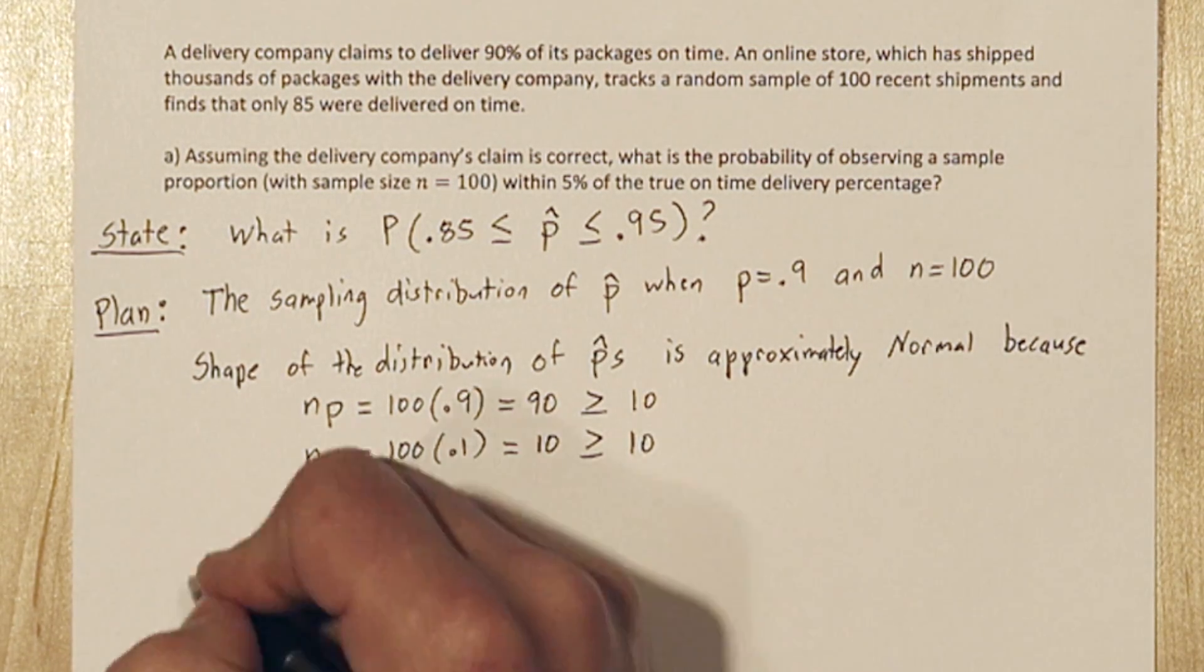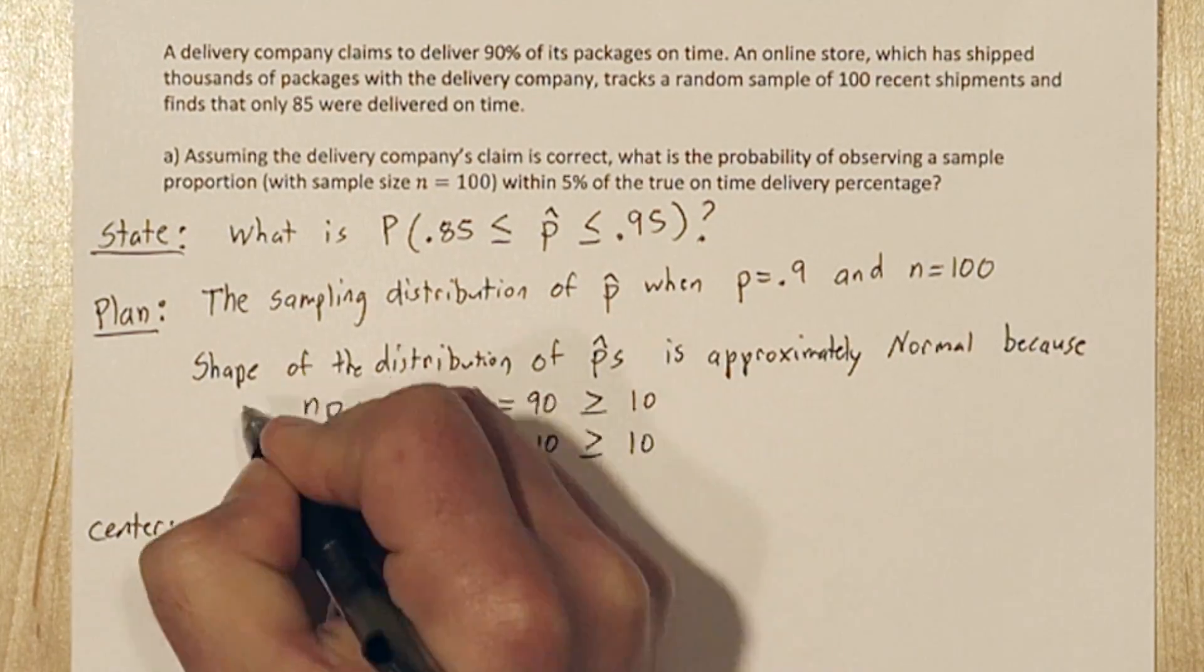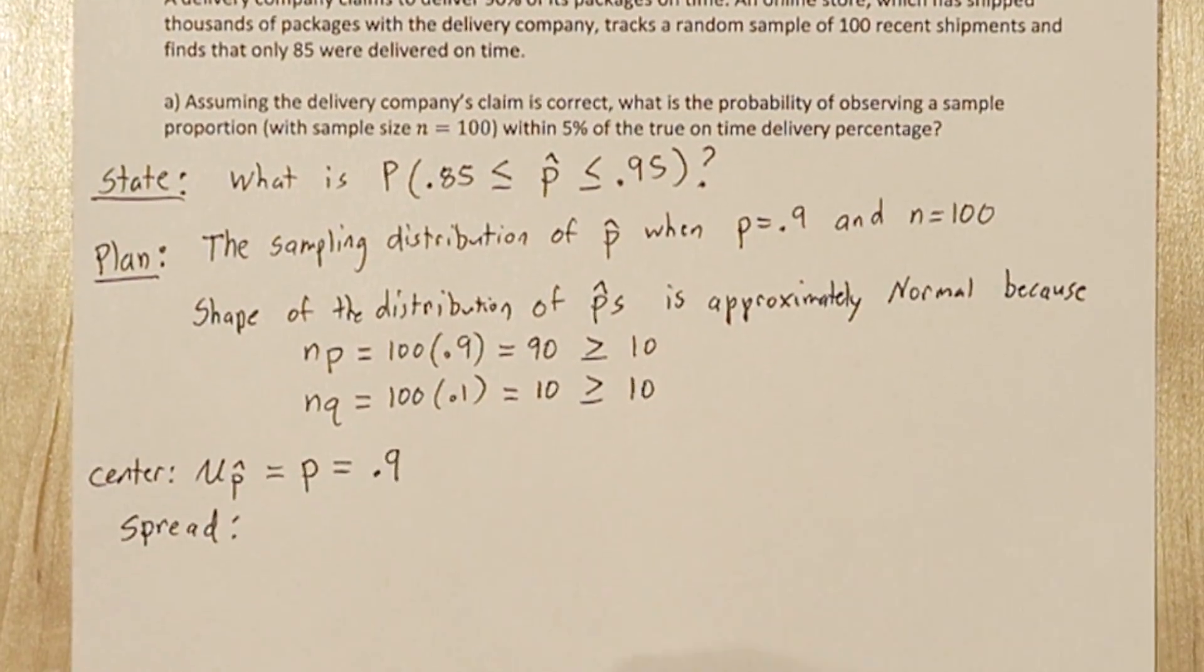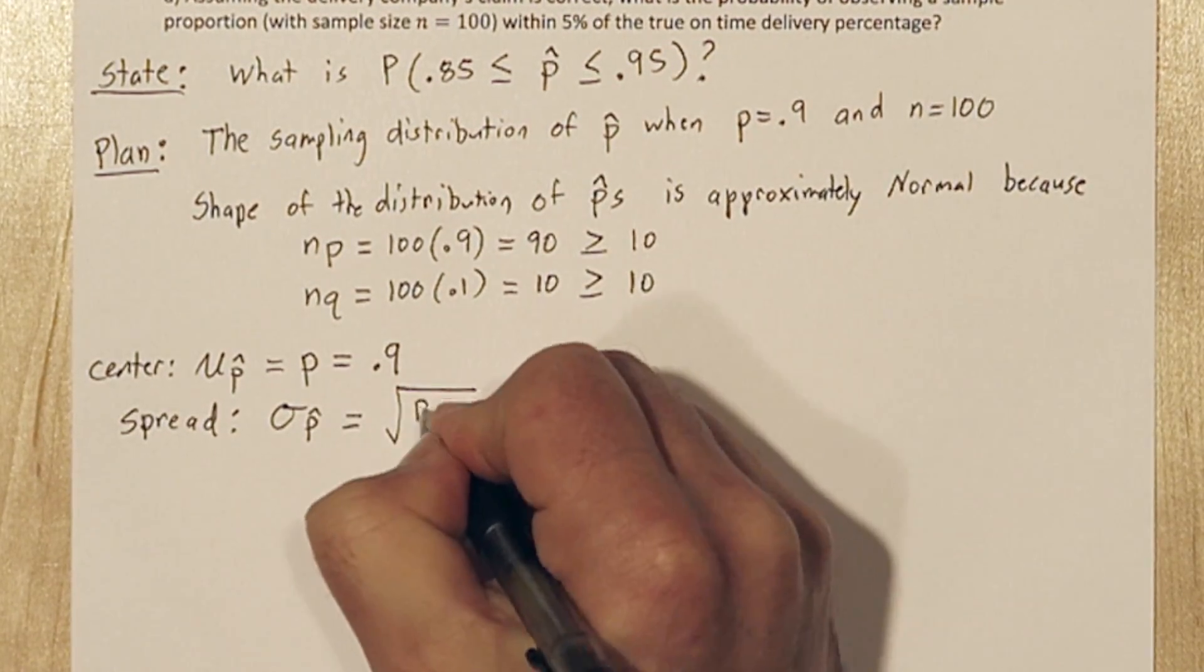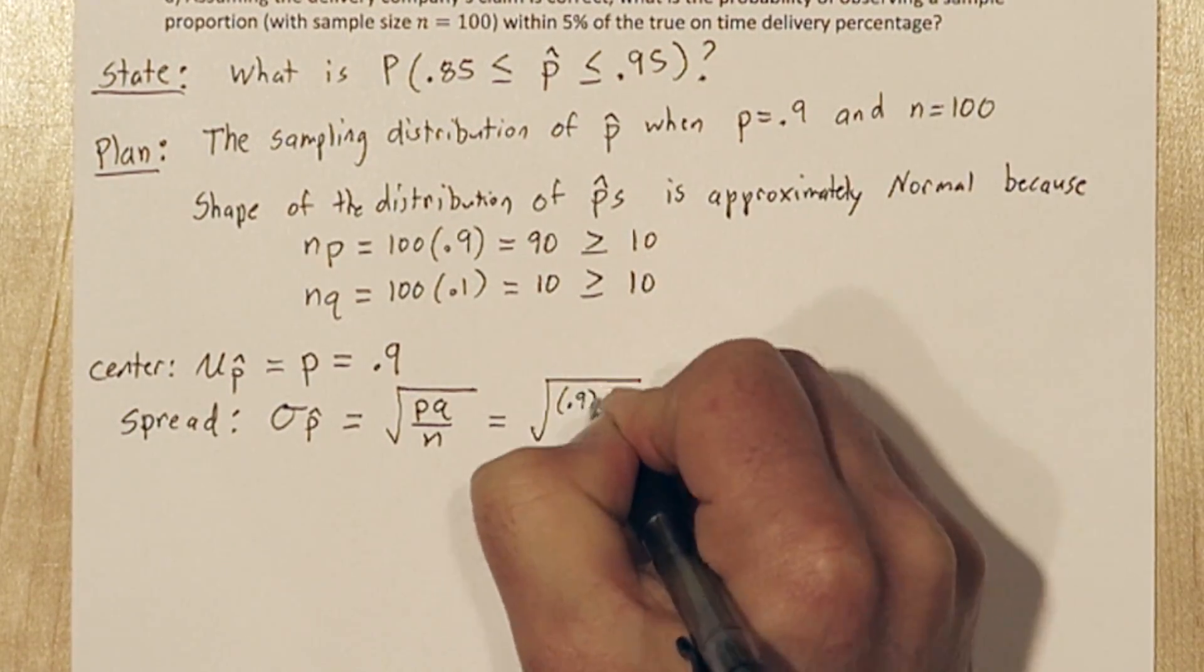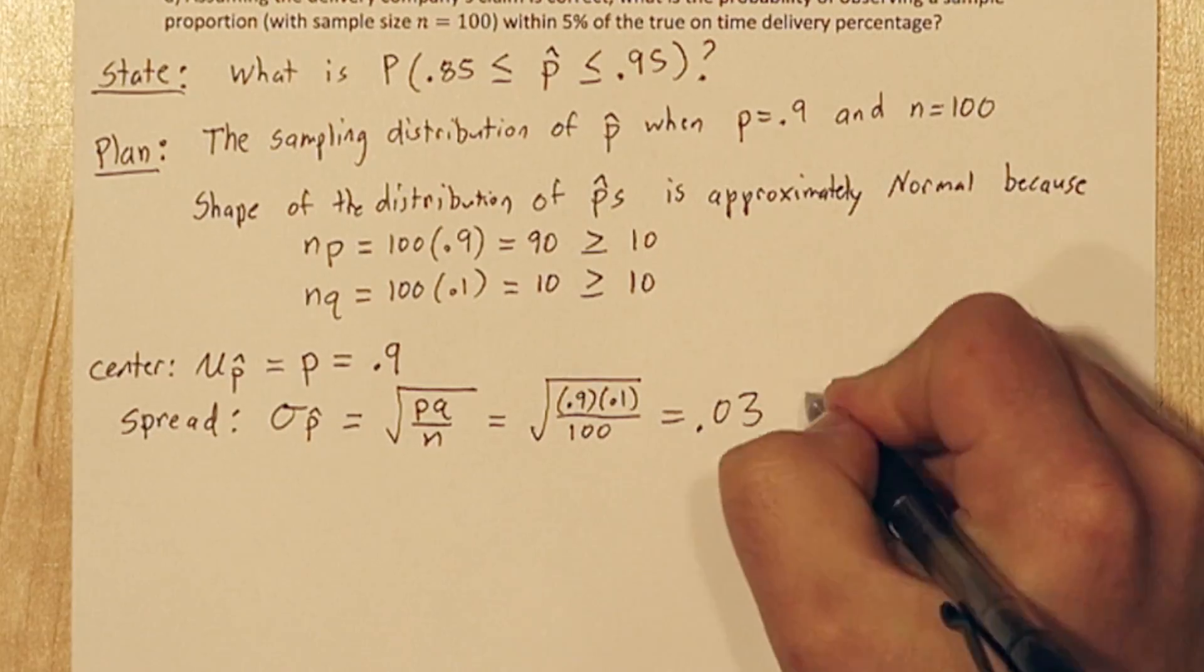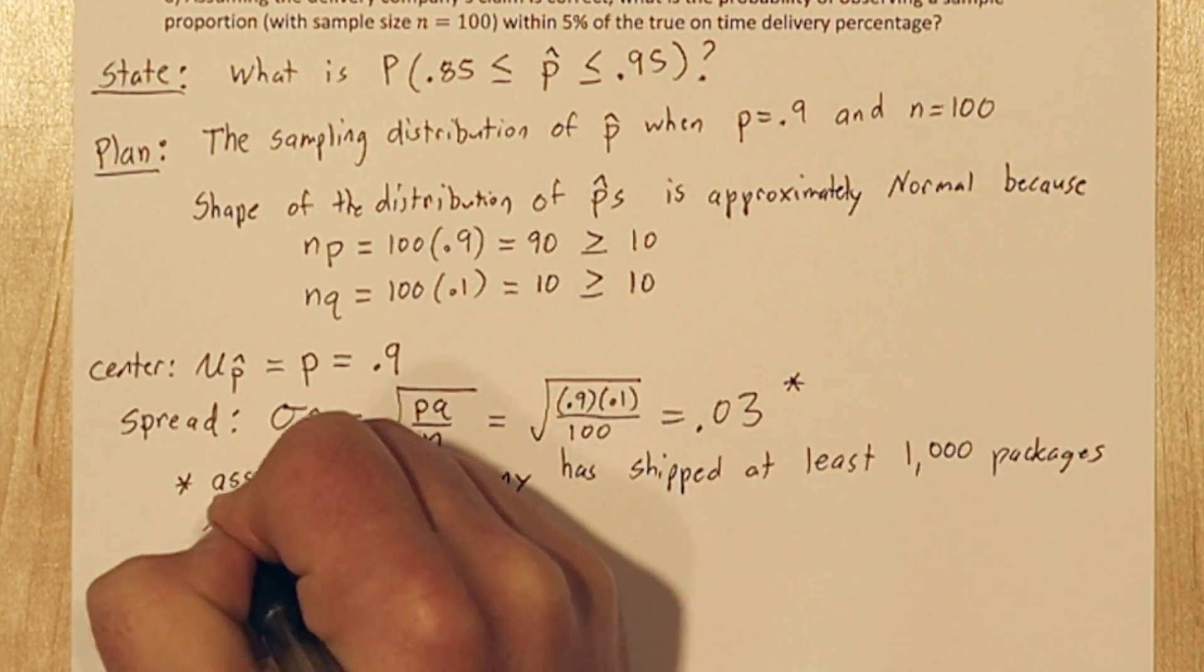The mean of our sampling distribution is p, the true proportion, 0.9. Also, if we assume the company has shipped at least a thousand packages, the 10% condition is met, and we can calculate the standard deviation of the sampling distribution.